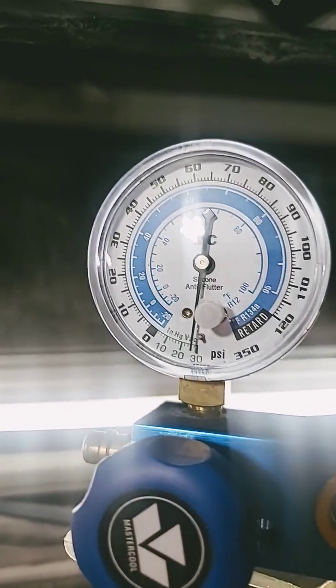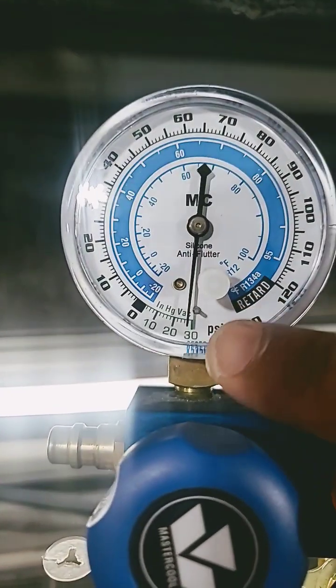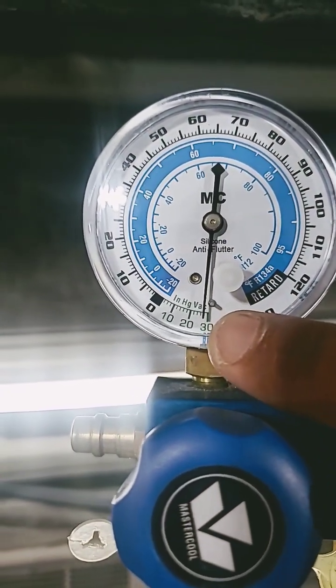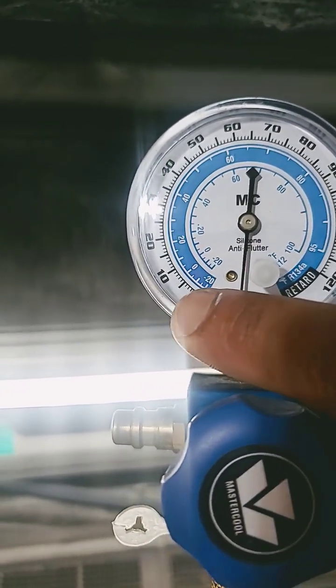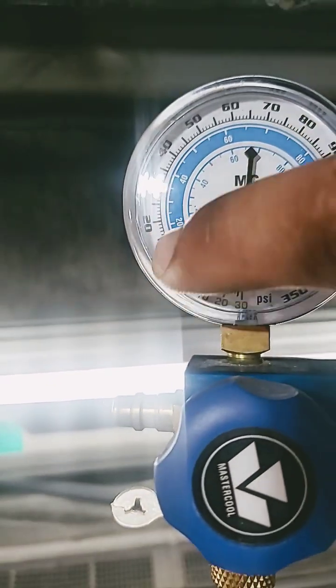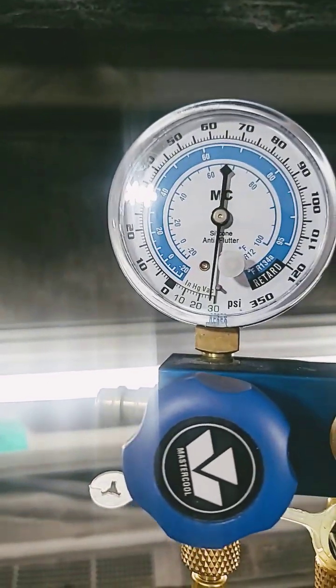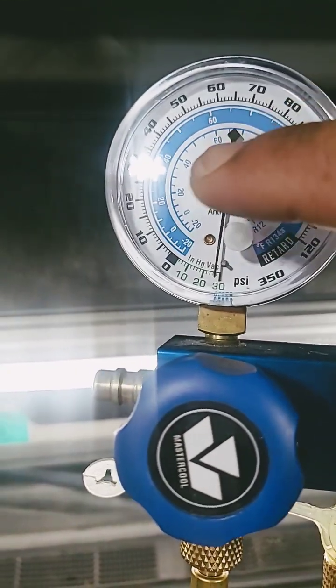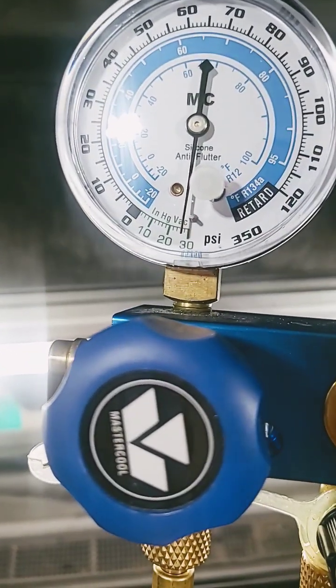Now, if you have a leak in your system, your gauge is not going to read 28 to 30 inches of mercury. Your gauge is going to stay up here, okay, around here. Because if you have a leak in your system, the pump can't pull a vacuum on the system.